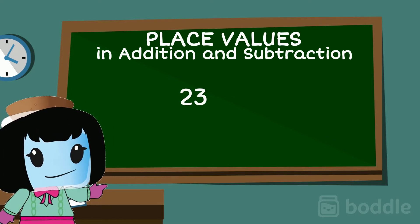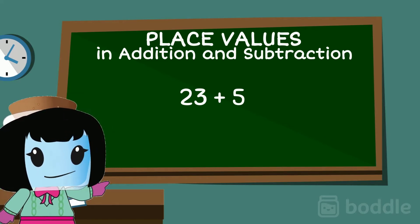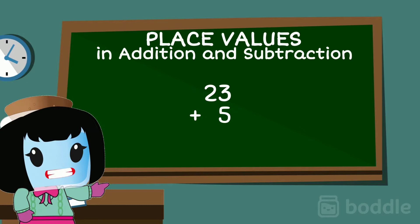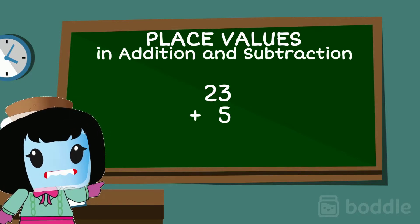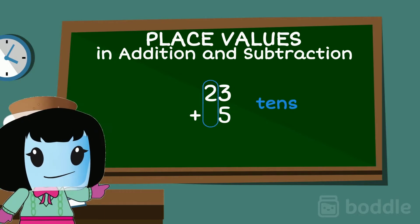Try adding 23 plus 5. We can write these numbers in a column, making sure that each place value is lined up with each other. Ones to ones, tens to tens.